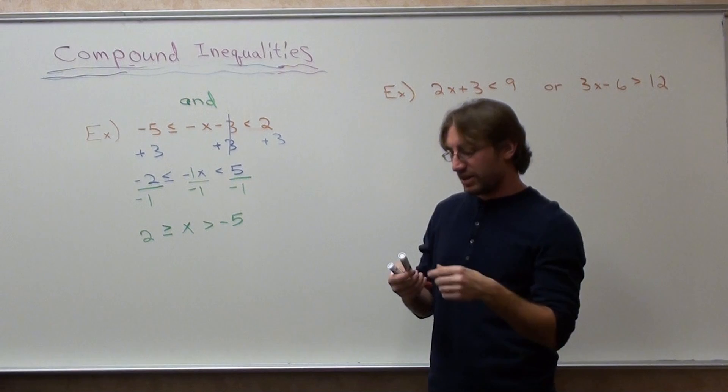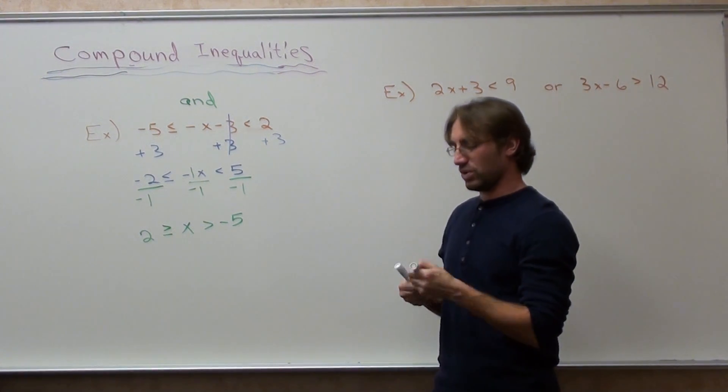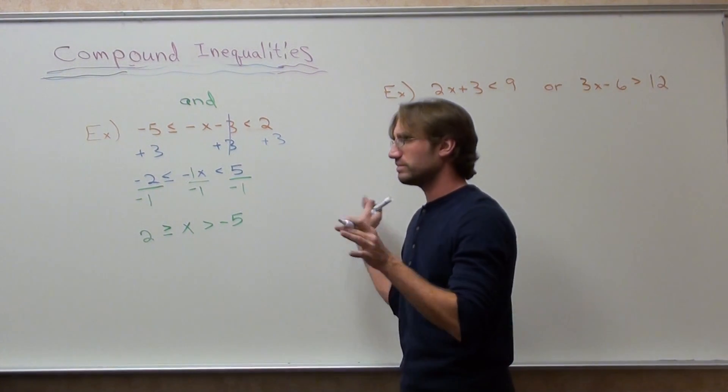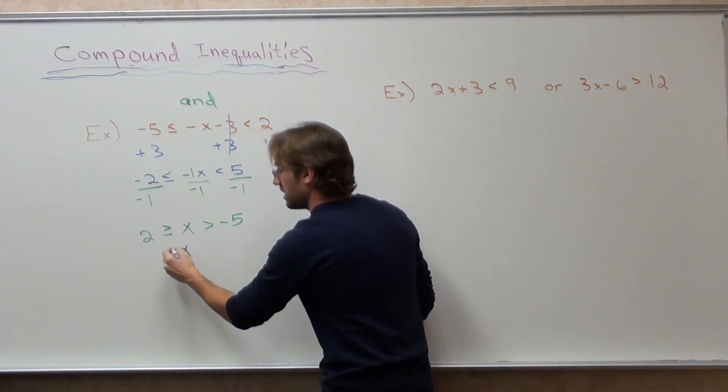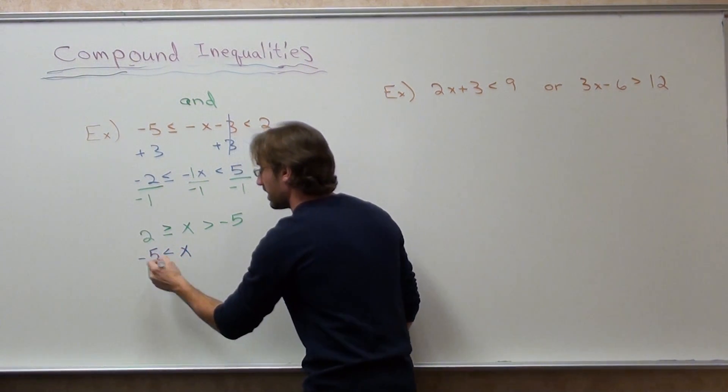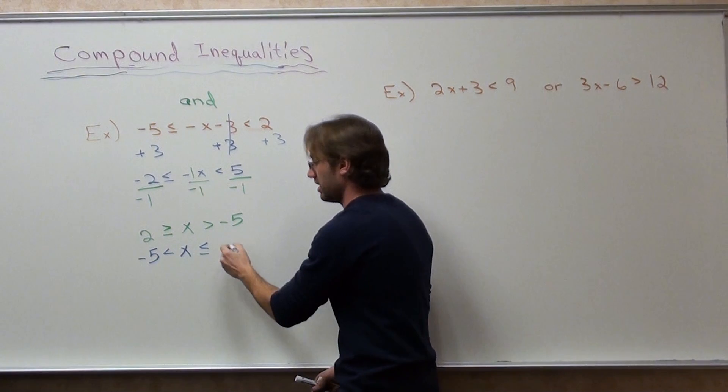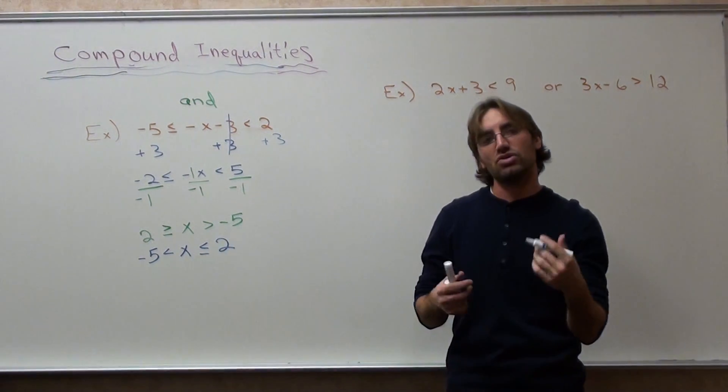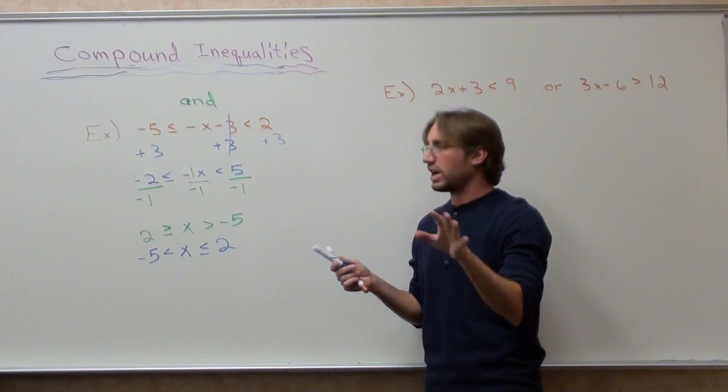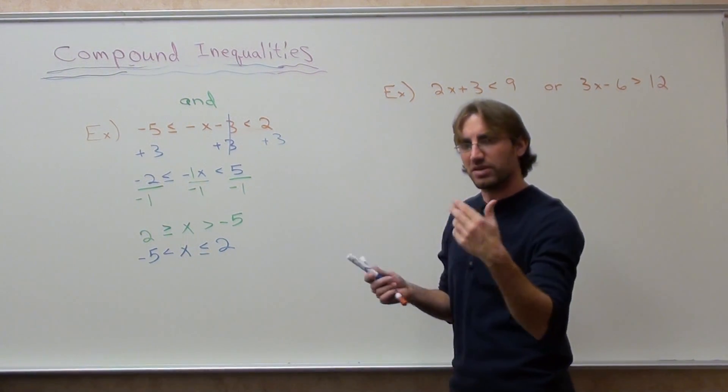Negative 1 divided by negative 1 is x. 5 divided by negative 1 is negative 5. Let me rewrite this now, so it makes a little bit more sense. x is greater than negative 5 and less than or equal to 2. Now that's not usually the way we graphed it. I'll show you how we graphed it momentarily, but let me finish.